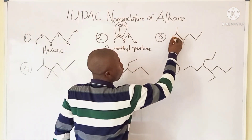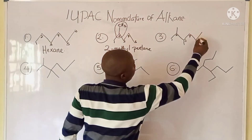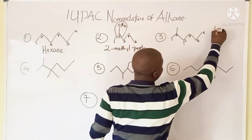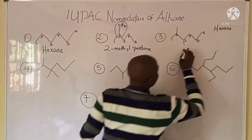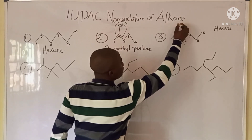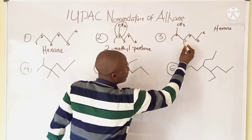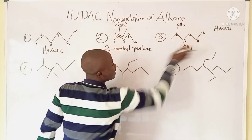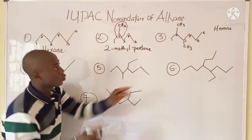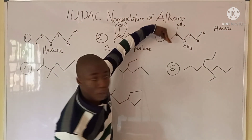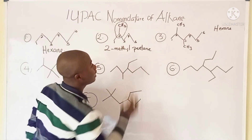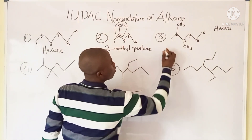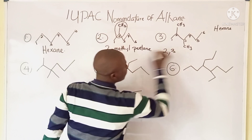For question three, the parent chain is one, two, three, four, five, six — so six carbons, making it hexane. We have different substituents: at carbon two there is a methyl group, and at carbon three there is also a methyl group. Numbering from the other direction would give larger values, and our aim in IUPAC nomenclature is to give substituents the smallest possible values. So the name begins with 2,3-dimethyl...